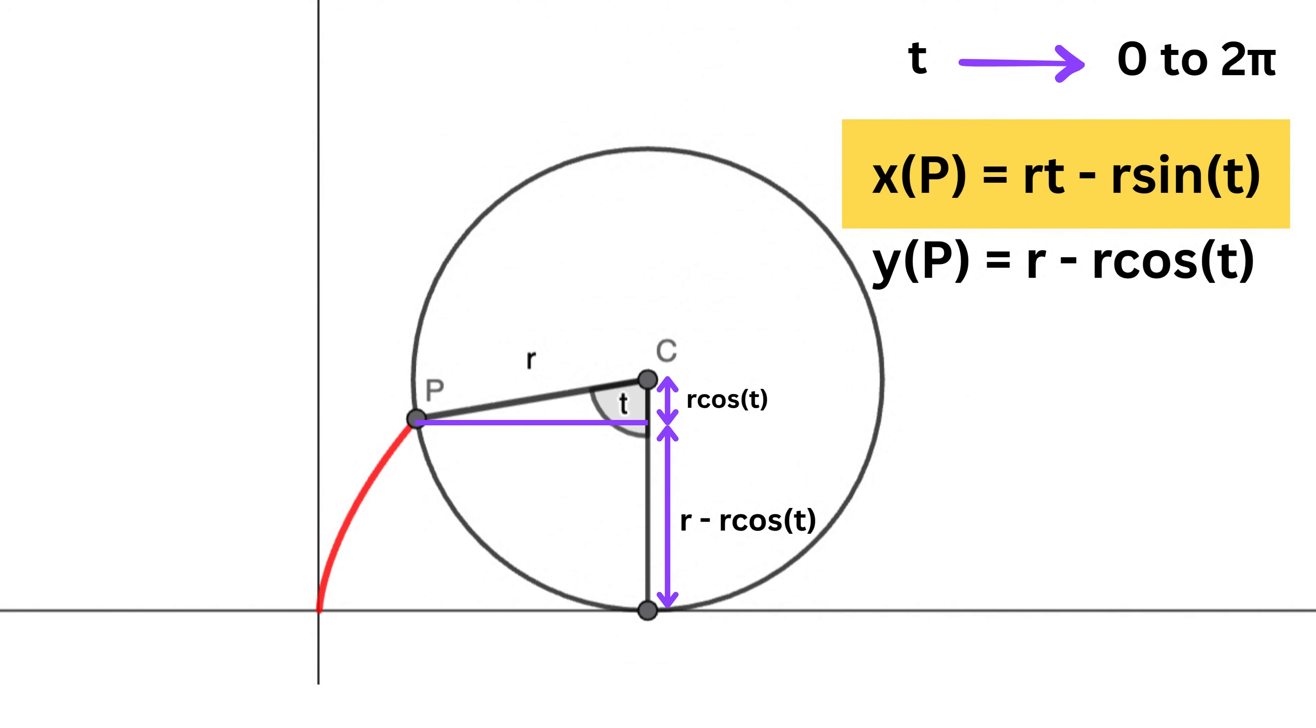So we have x equals this, and y equals this. These two expressions together are the parametric description of the cycloid, where both x and y are in terms of a single variable T. Keep in mind that T runs from 0 to 2 times pi for one full arch. Great.